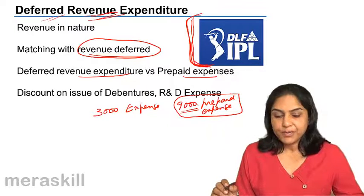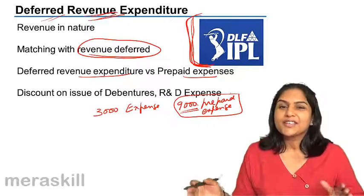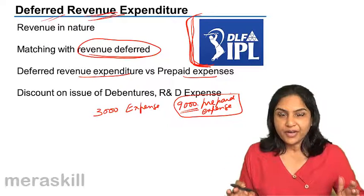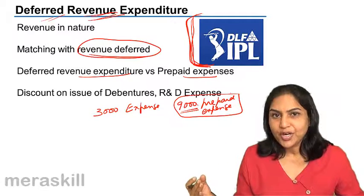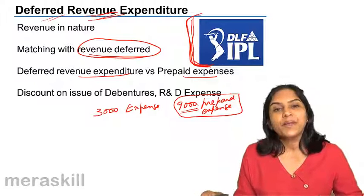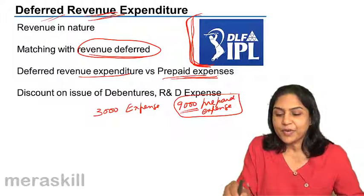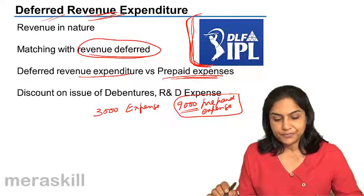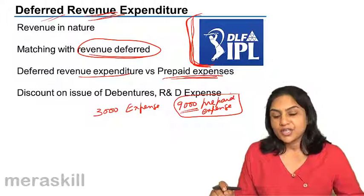In the case of deferred revenue expenditure, while we know the benefit will be received in future years, it is really difficult to exactly match the amount with the revenue generated, or to exactly spread it over the period. We may not always be sure for how long the benefit would be received. The difference is a bit fine, but there is greater certainty with prepaid expenses, but not so much with deferred revenue expenditure. Examples include discount on issue of debentures, research and development expenses, or heavy advertising expenses.